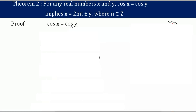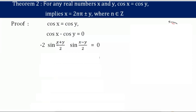We can also write cos x equals cos y as cos x minus cos y equals 0, by shifting cos y to the other side of the equation. Now cos x minus cos y is nothing but minus 2 sin((x+y)/2) · sin((x−y)/2) equals 0.